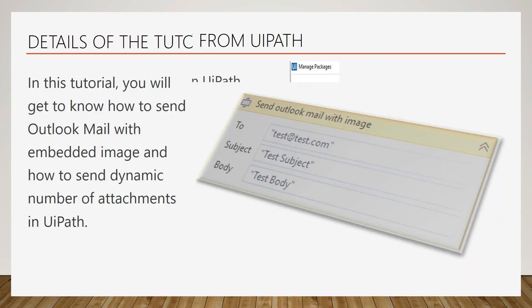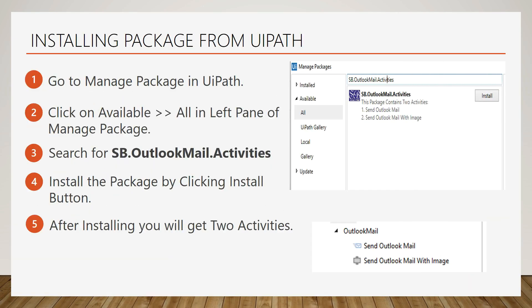To use this activity, you have to first install the package in UiPath. Go to Manage Package in UiPath. Click on Available and then the All option in the left pane of Manage Package. Search for sp.outlookmail.activities and install the package by clicking the Install button.